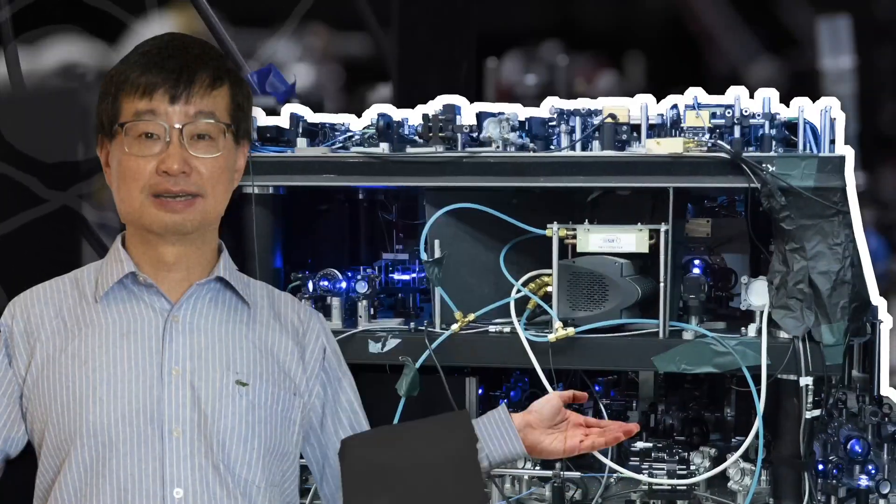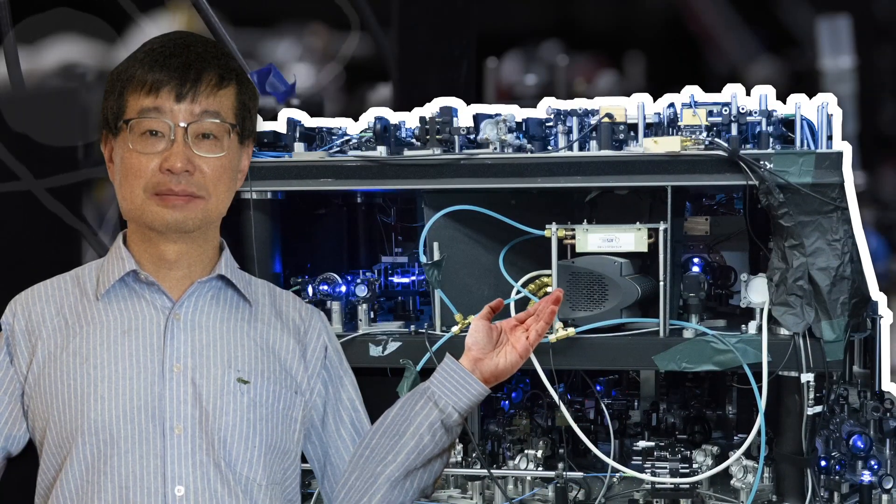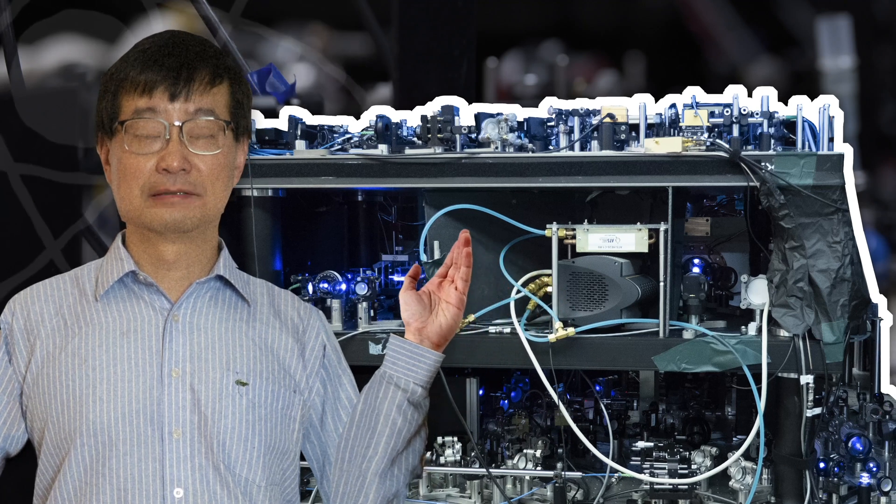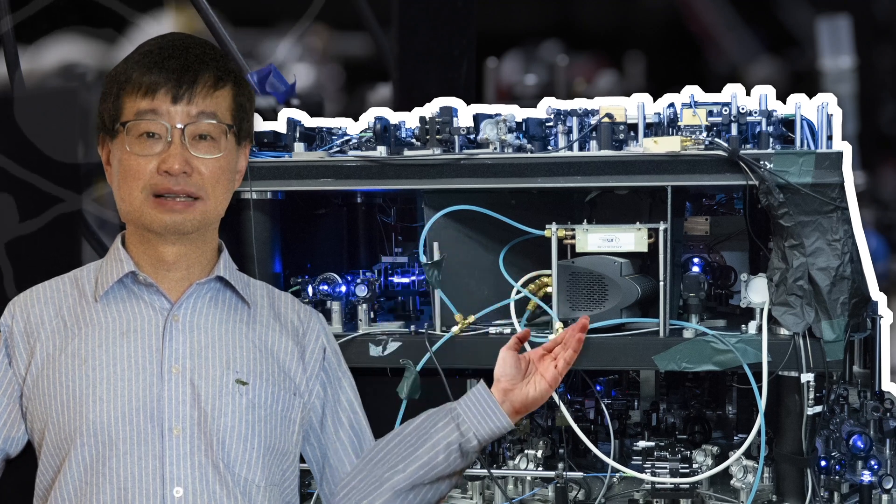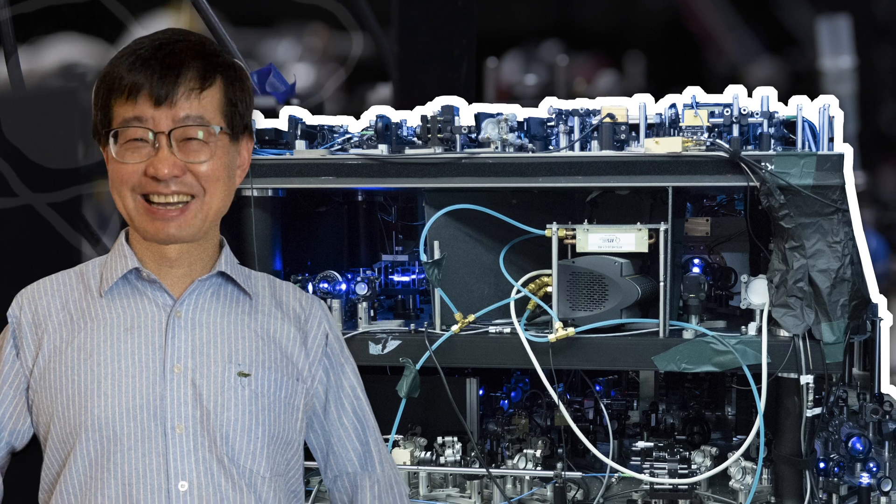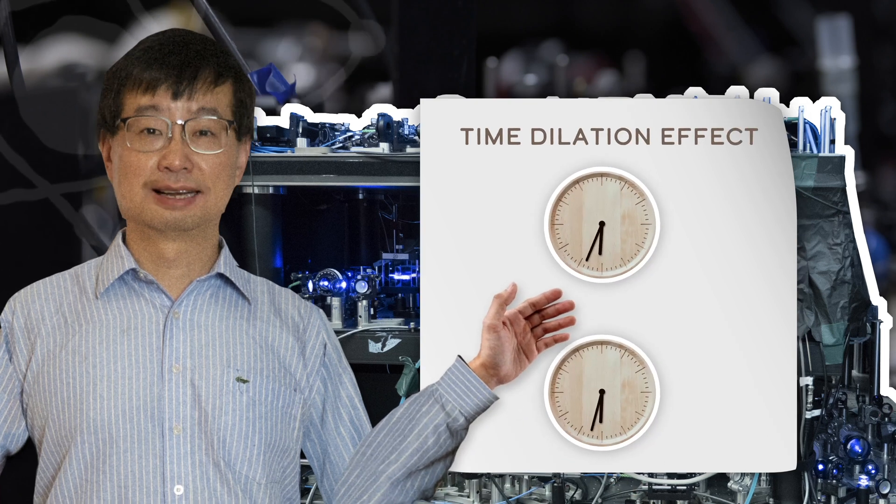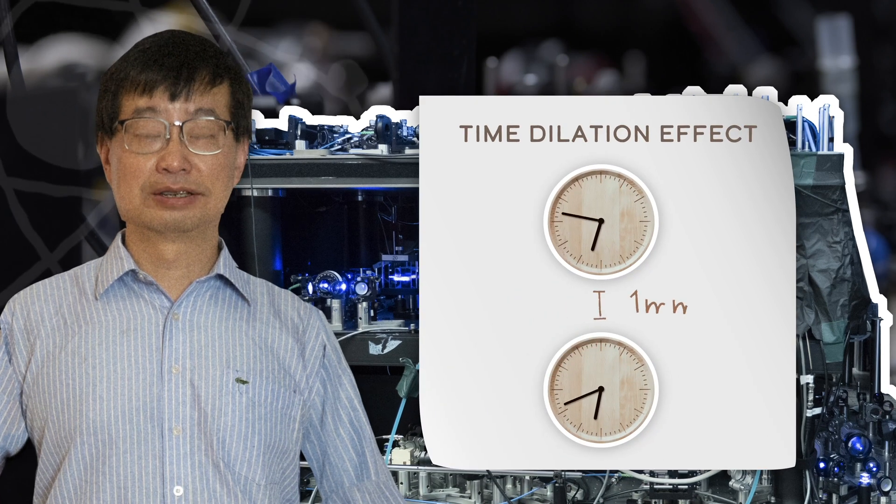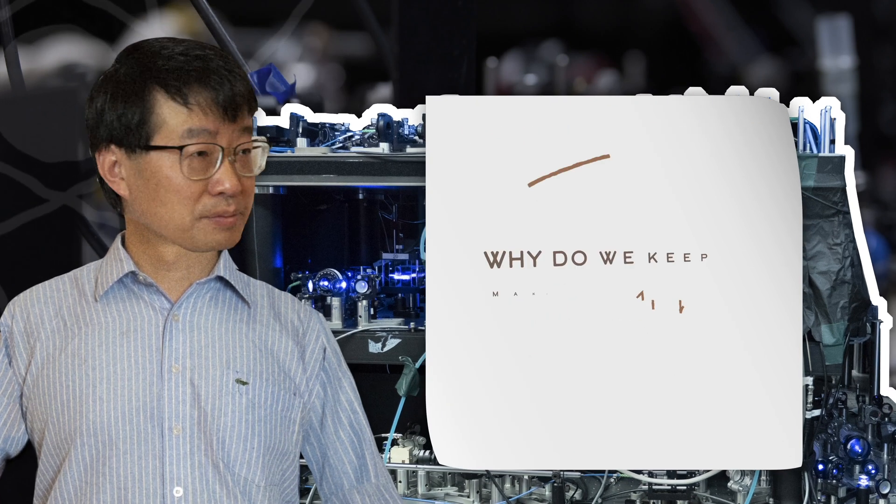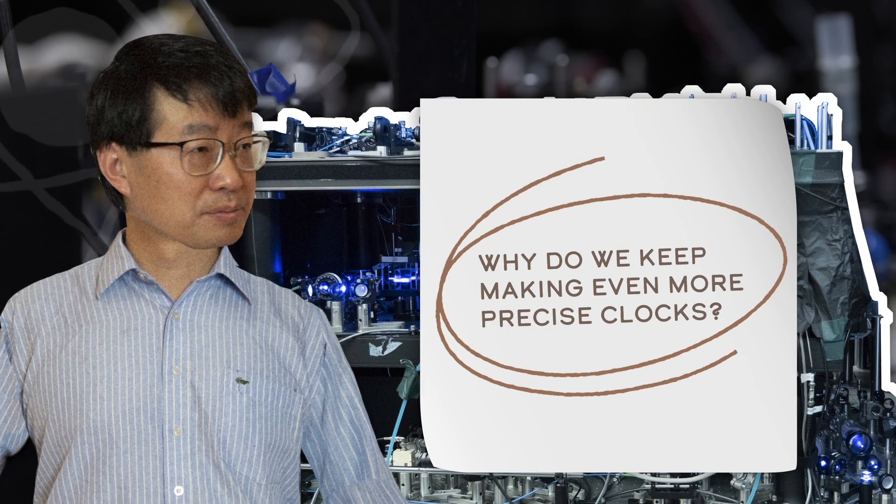This is clearly a new measurement capability that we have never done before. And when we say we, meaning the humankind. And this really is the first time in a laboratory that we can measure time dilation effect across distance of a millimeter. So why do we keep making even more precise clocks?